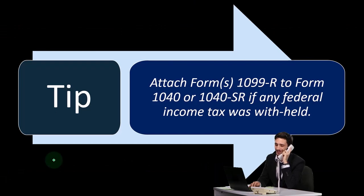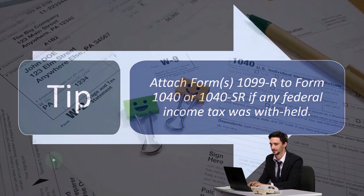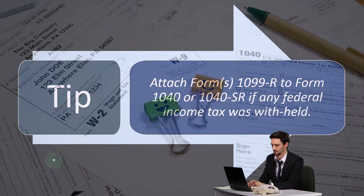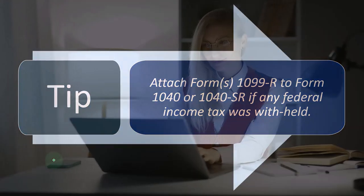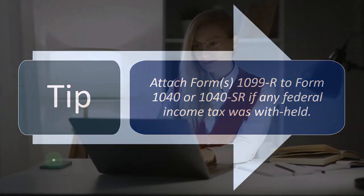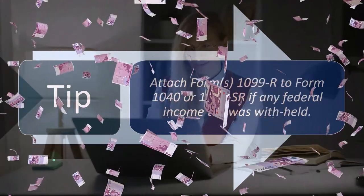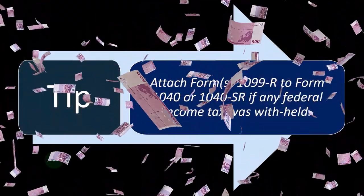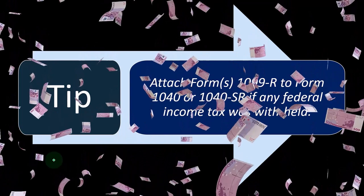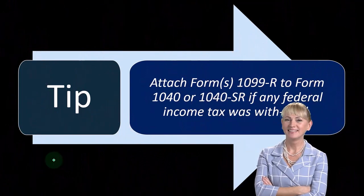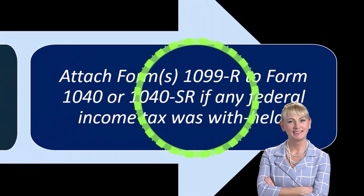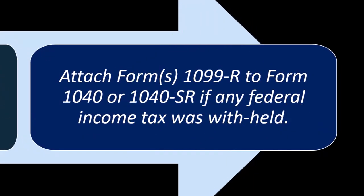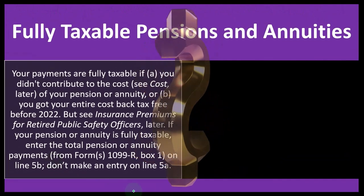These forms are similar to W-2s in that during your working years the W-2 is typically where you'll see withholdings. If you're beyond your working years, a lot of your income will come from investments like a 401k or IRA, which are still often subject to tax. You can set up withholdings on those distributions similarly to W-2 withholdings, or you can make estimated payments during your retirement years.